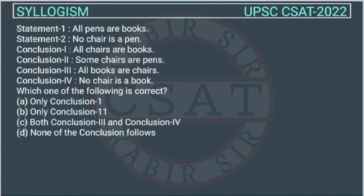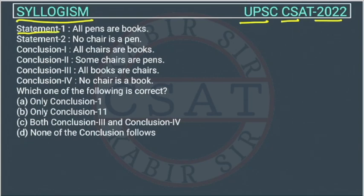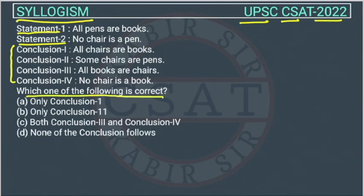This is a question of reasoning from the syllogism chapter, asked by UPSC in their CSAT paper of 2022. In these kinds of questions, two statements are given and we have to find which conclusion is correct — which conclusion we can draw from these two statements.